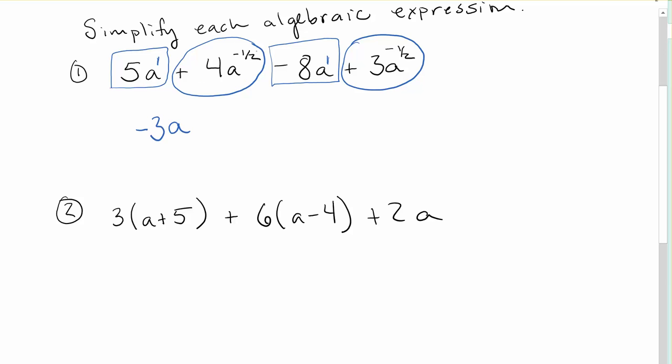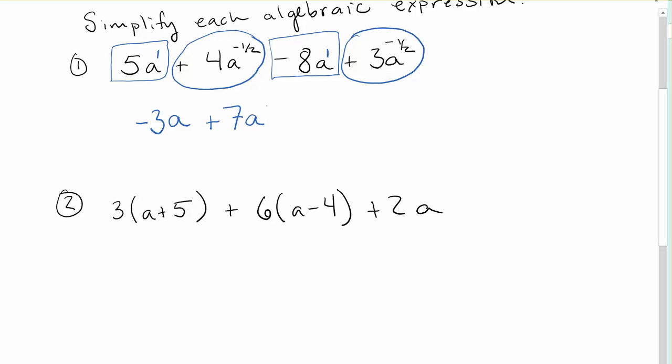I'm looking at the next two terms that we will combine, the 4a to the power of negative 1 half and 3a to the power of negative 1 half. Those combine to get me a total of 7. 3 plus 4 equals 7 and again you leave the base and the power the same.